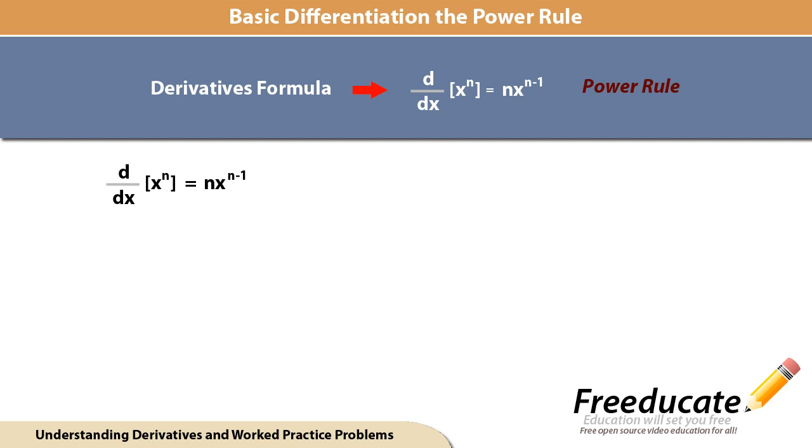Hey, welcome back to another exciting tutorial on derivatives. This time we're going to be working with the power rule. The power rule theorem states: if n is a rational number, then the function f(x) equals x to the nth power is differentiable. For f to be differentiable at x equals zero, n must be a number such that x to the n minus one is defined on an interval containing zero.